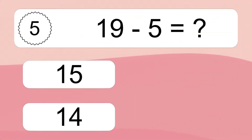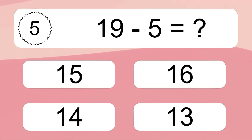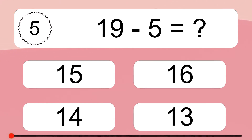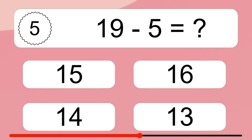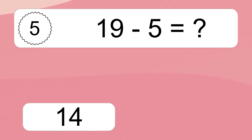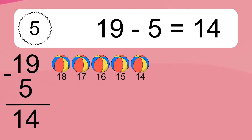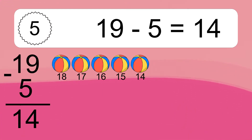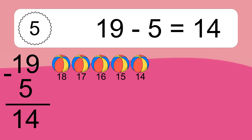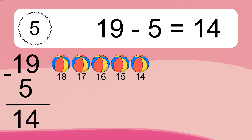19 minus 5 equals what? 19 minus 5 equals 14. Let's count it: 18, 17, 16, 15, 14.